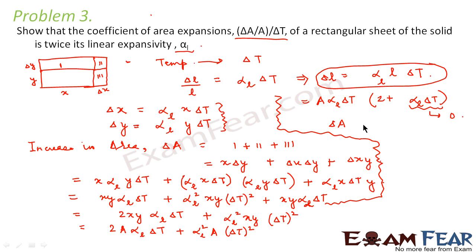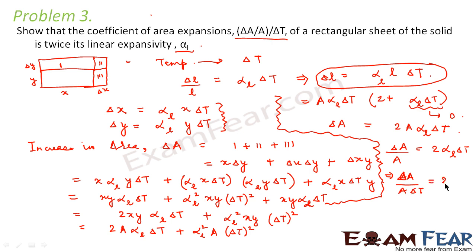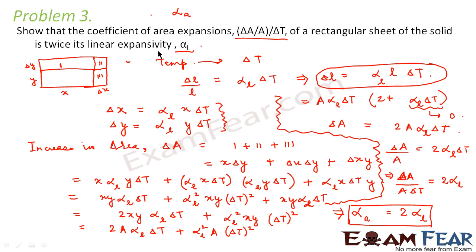So we can say delta A equals 2A alpha L into delta T, or delta A by A equals 2 alpha L delta T, which gives delta A by A divided by delta T equals 2 alpha L. This is the coefficient of area expansion, so alpha A equals twice alpha L. This is what we wanted to prove: the coefficient of area expansion of a rectangular sheet of solid is twice its linear expansivity.